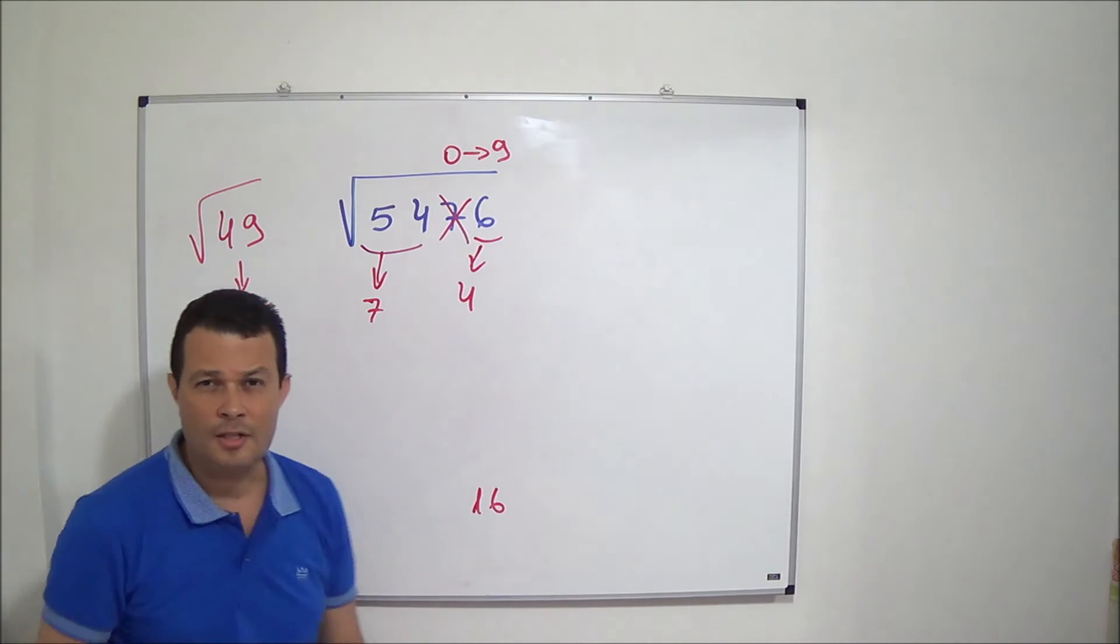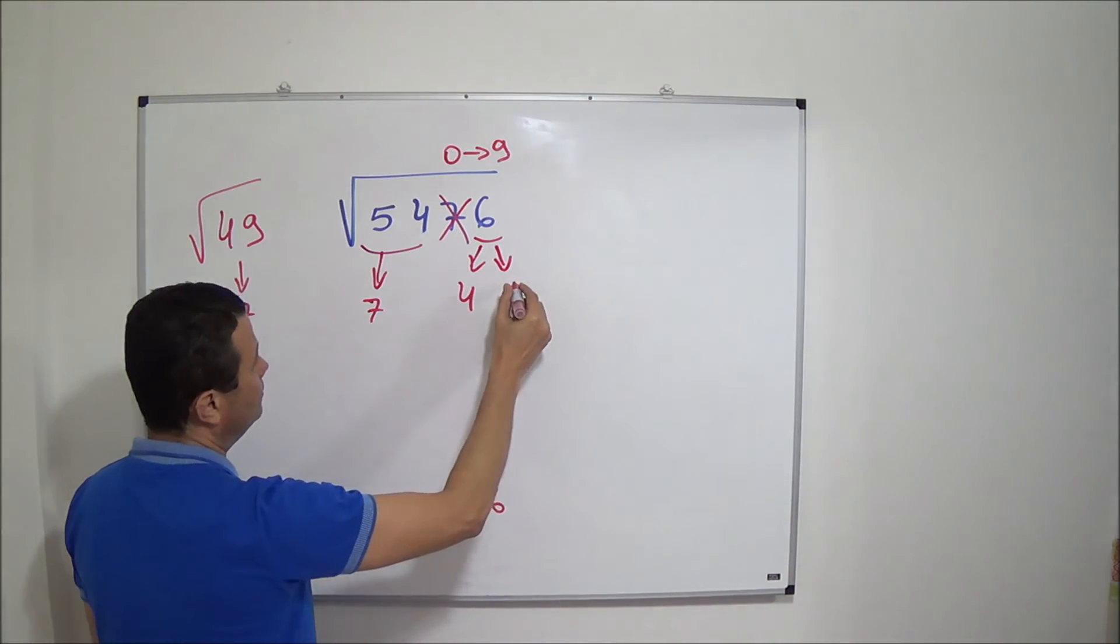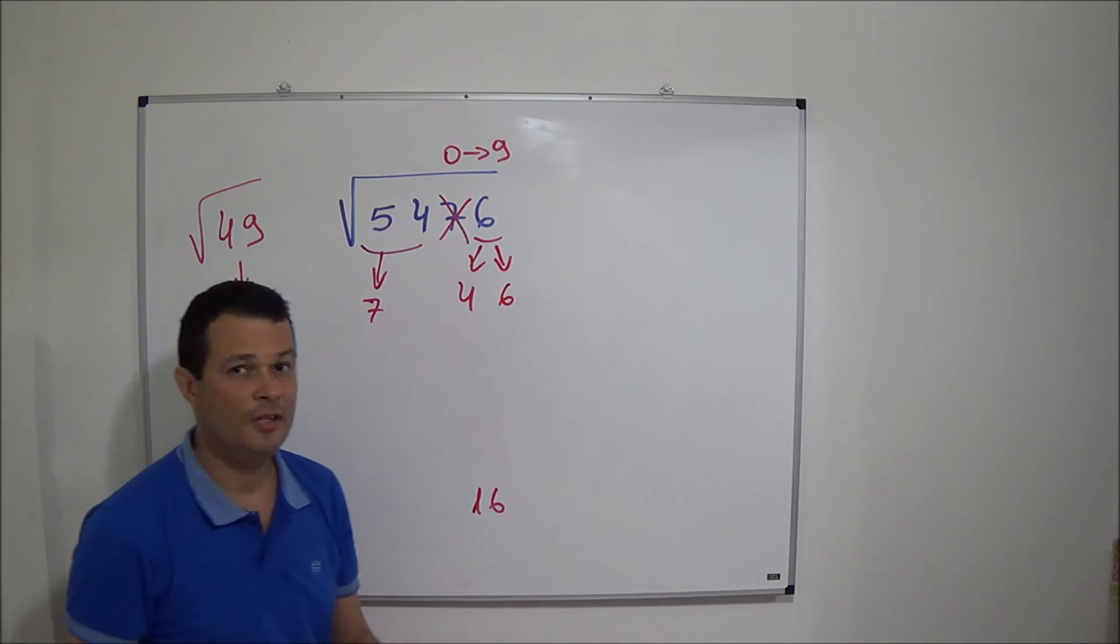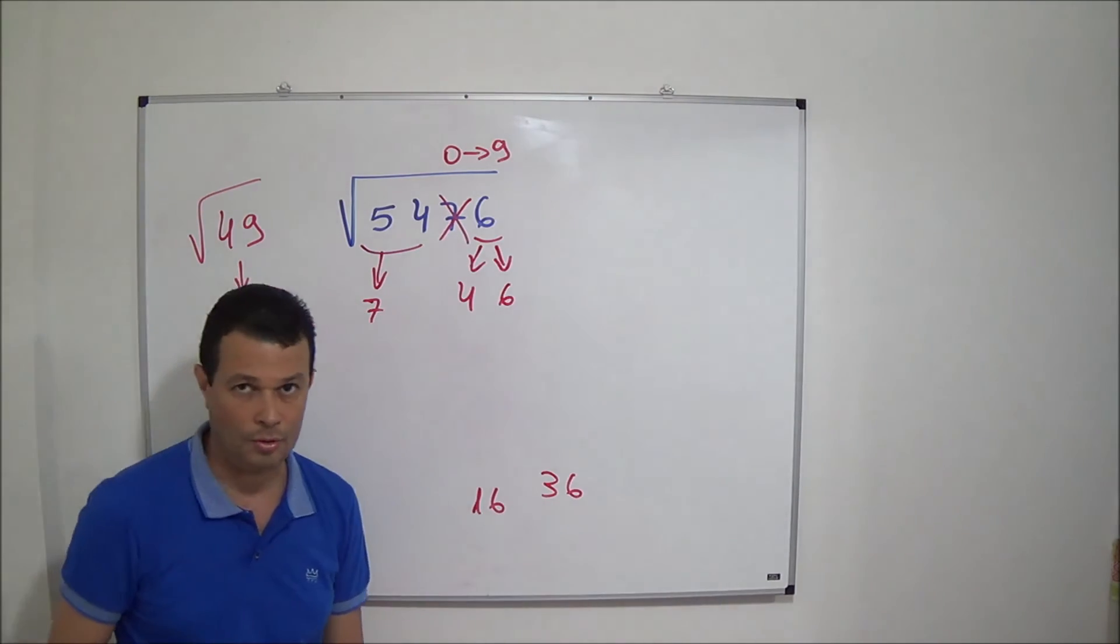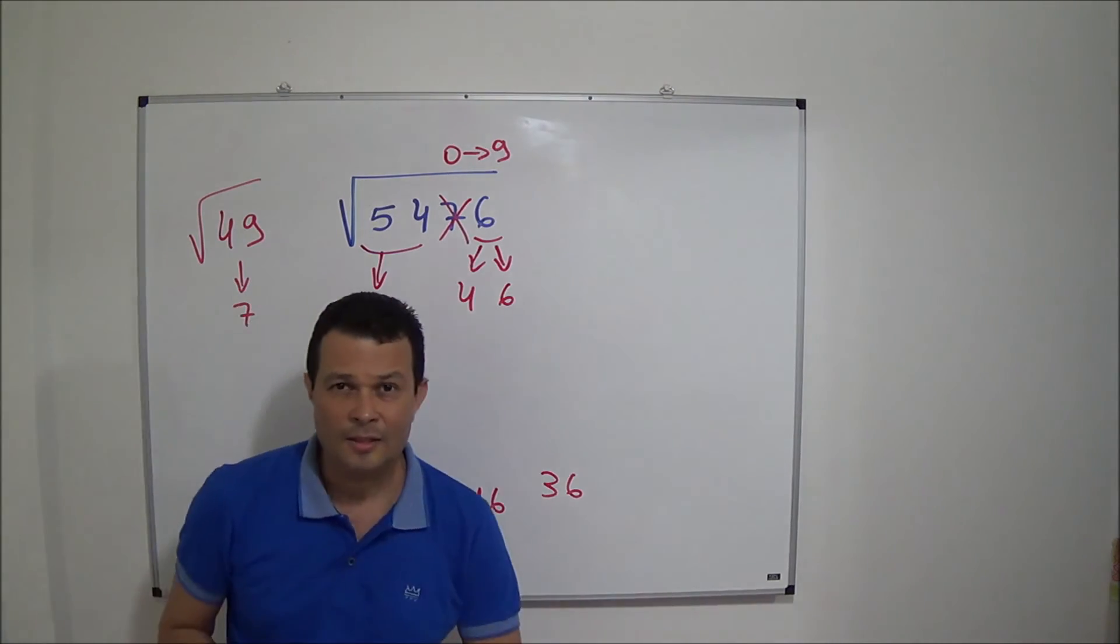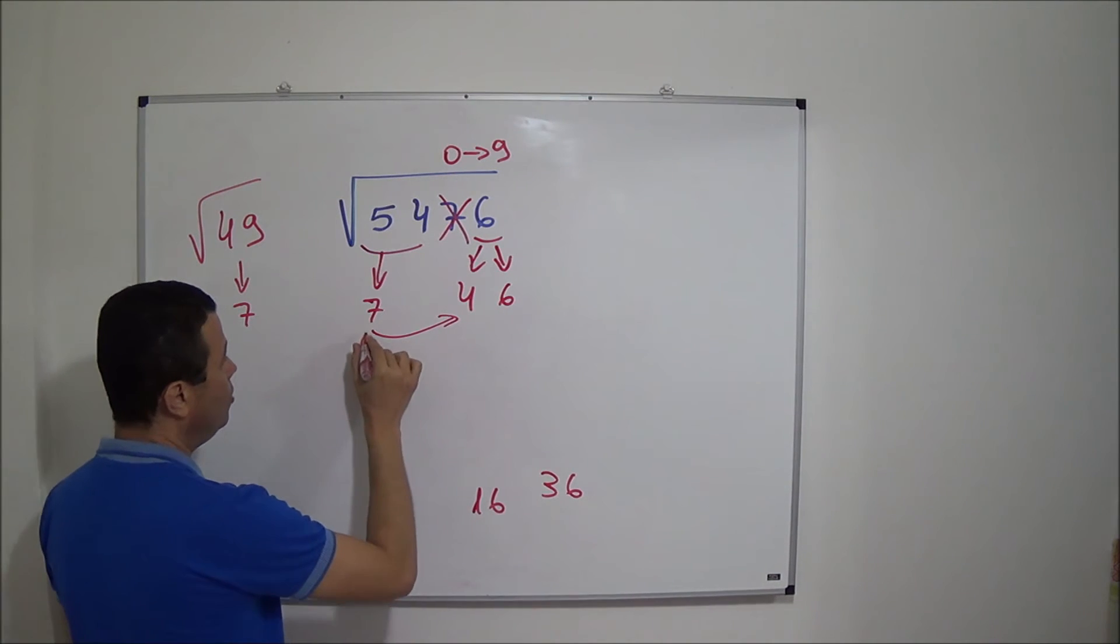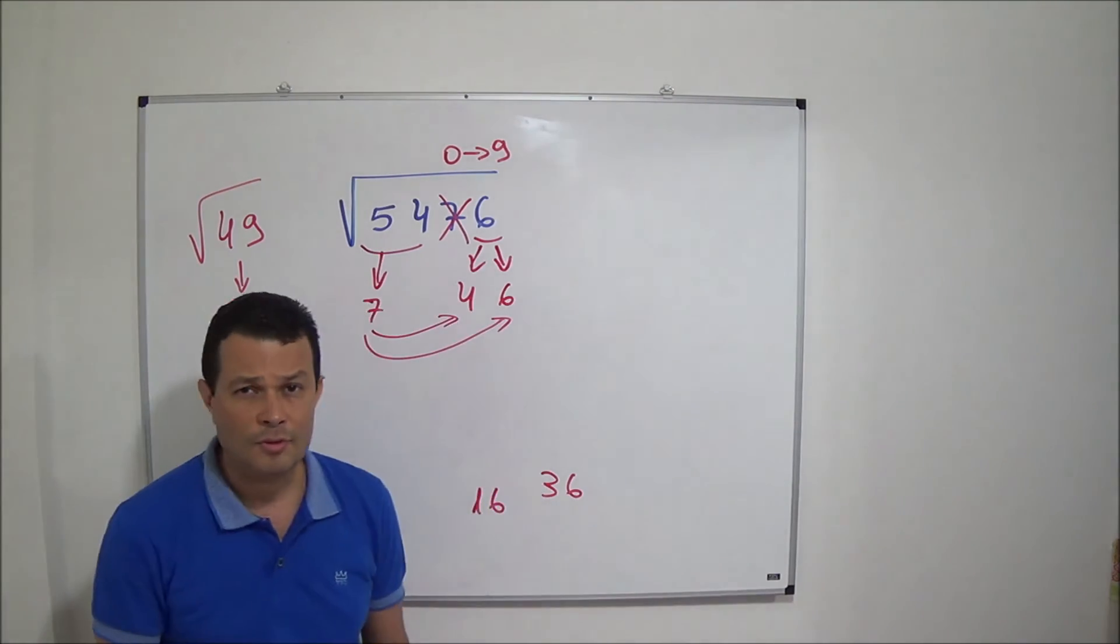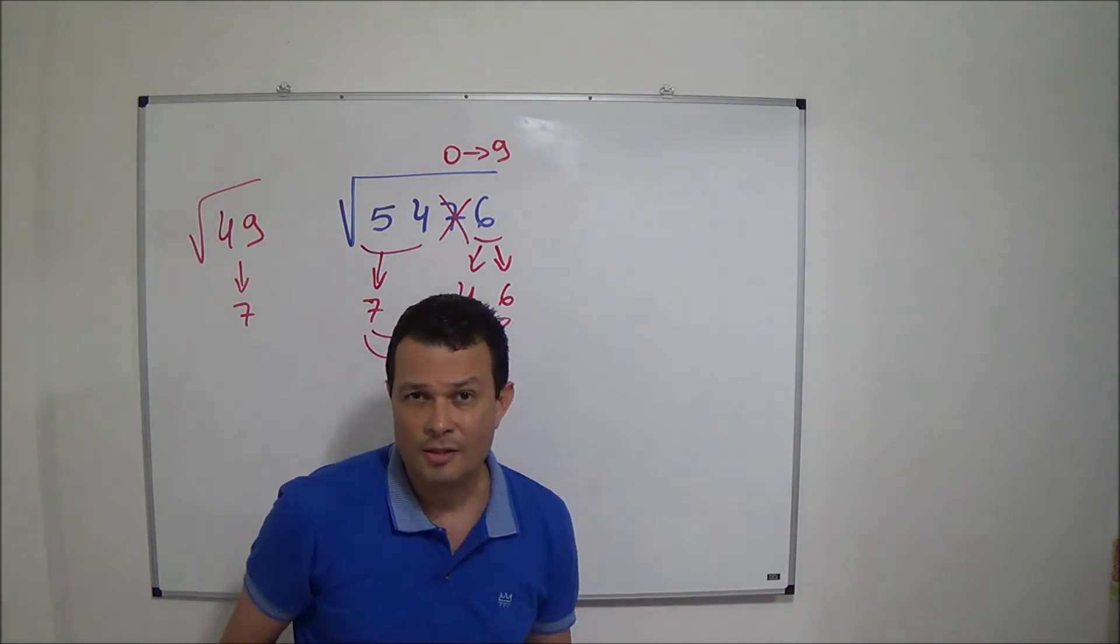But in this case, we have other option. That is number 6, because 6 times 6 is 36. 36 ends in 6 also. In this case you have 2 options. It means that the square root of this number could be 74 or 76. In this case we have to test 2 options to describe the right answer.